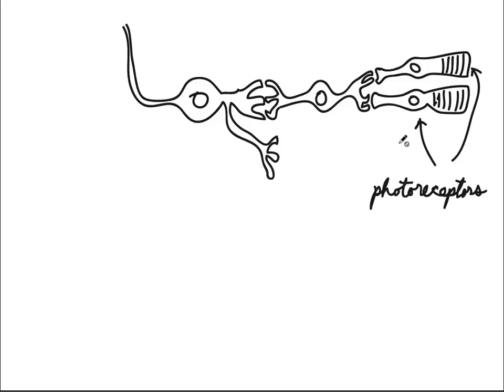There are multiple types of photoreceptors in the retina. There are rods and cones. This drawing illustrates the rods.